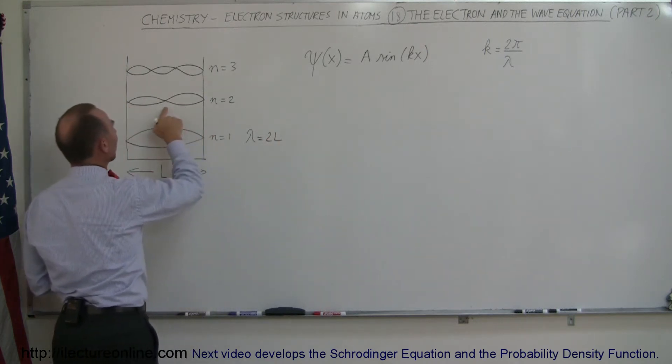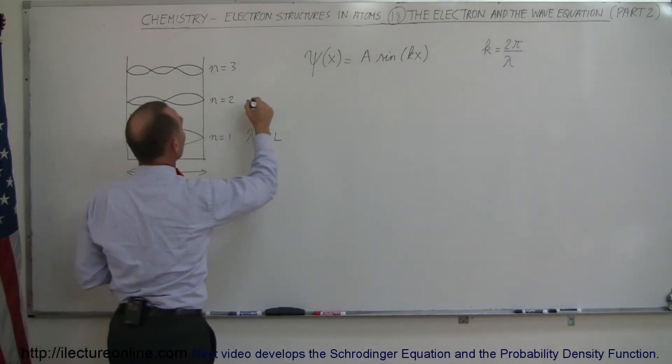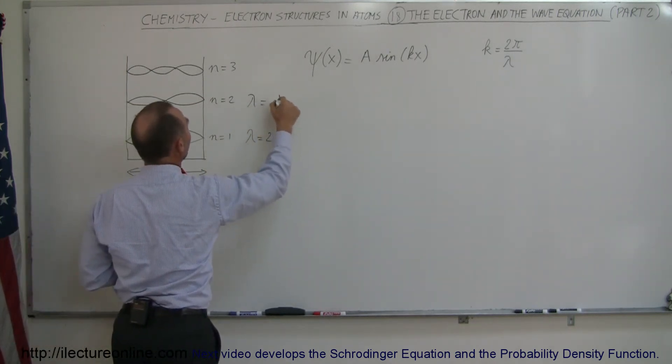Over here we can say that the length of the box is equal to exactly one wavelength. So in this case, we can say that the wavelength is equal to 2L.